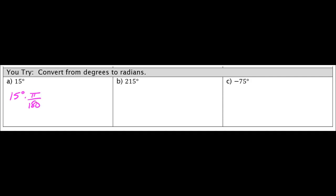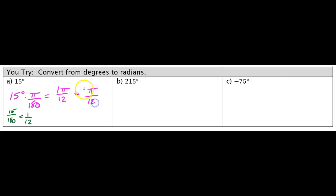Now what I would do from here, you can reduce this fraction by hand. If you have a calculator that will reduce fractions for you, what you want to do is put in the fraction 15 over 180. You do not want to put the pi in, otherwise it's going to give you crazy decimals. When you do this, it's going to give you the answer 1 over 12. So what that means is that our final answer would be 1 pi over 12, but because there's a 1 there, it's unnecessary. So the final answer would just be pi over 12.